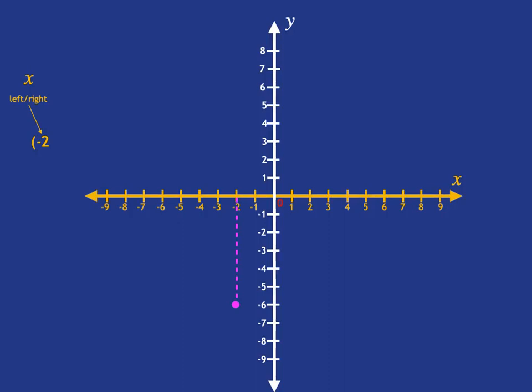And then we need to get our y-coordinate. And we do that by using our y-axis as the measuring stick. And we go straight across to our y-axis. And we see that we're at the level that is six steps below the origin. So our y-coordinate is negative six.